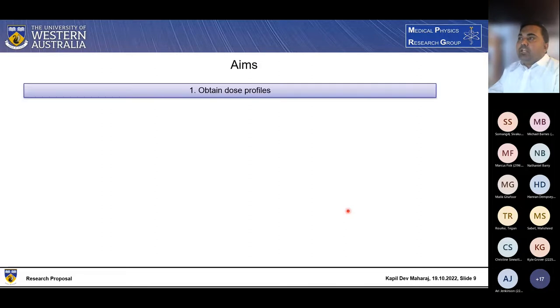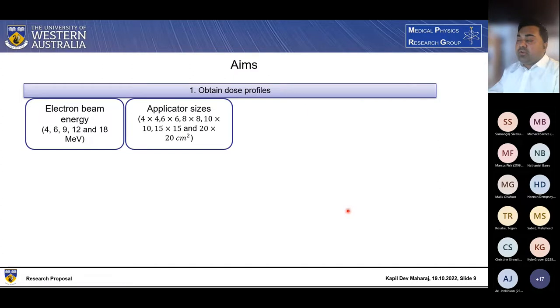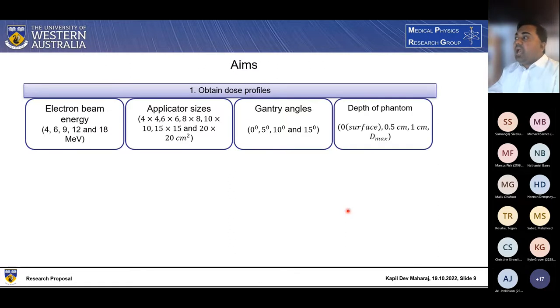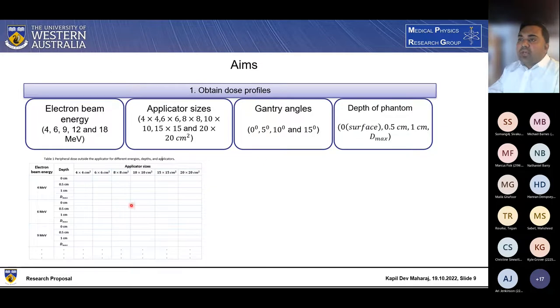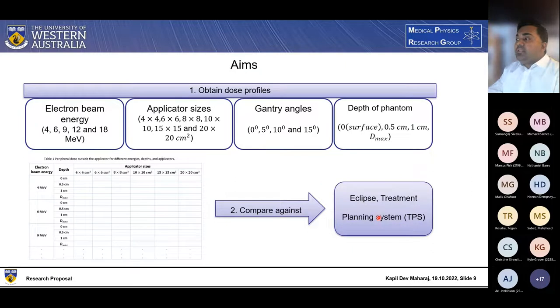So in terms of the aims of my project, I will obtain the dose profile using electron beam energy of 4, 6, 9, 12, and 18 MeV and using the different applicator sizes such as 4 by 4, 6 by 6, 8 by 8, 10 by 10, 15 by 15, and 20 by 20 centimeters square. Gantry angle at 0 degree, 5 degree, 10 degree, and 15 degree, and at depths of 0, 0.5, 1, and D max. After obtaining the dose profile, I will produce the data which could look like this, and then I will compare this data against my treatment planning system Eclipse.